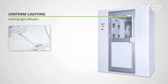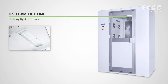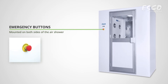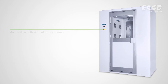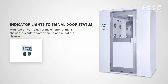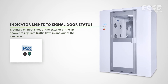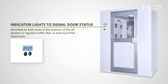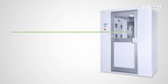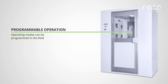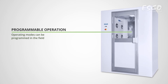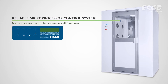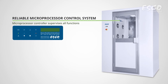Light diffusers ensure uniform lighting throughout the chamber. An emergency stop button is mounted on the sides of the air shower. Indicator lights mounted on both sides of the exterior regulate traffic flow in and out of the clean room. Operating modes can be programmed in the field, and a microprocessor controller supervises all functions.